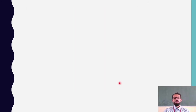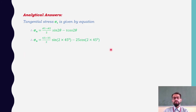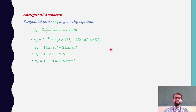For the tangential stress analytically: sigma_t = (sigma1 - sigma2)/2 · sin2θ − tau · cos2θ. Substituting values and simplifying, sigma_t = 15 N/mm². Both graphical (Mohr circle) and analytical methods give identical results, confirming the answer.